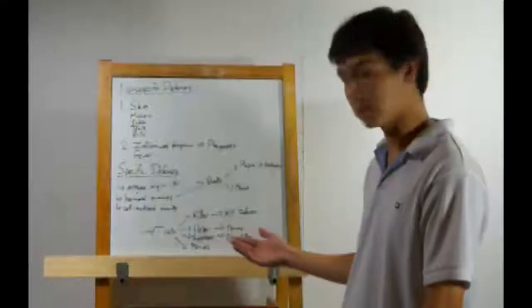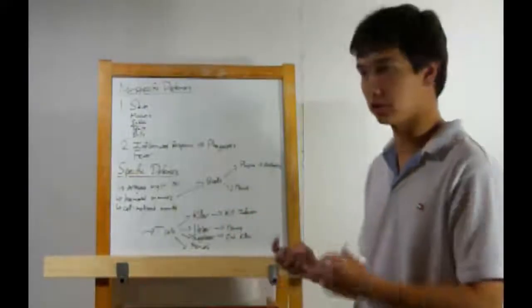And finally, the memory T cells. These are produced by the helper T cells. Again, they'll simply help fight off the infection should it return.